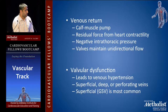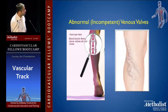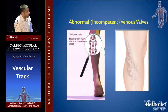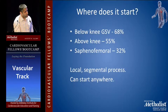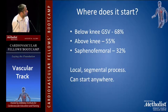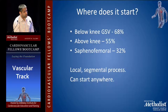The saphenous vein is the most common vein affected. If you have incompetent venous valves, blood flows in the opposite direction, resulting in increased pressure in the lower leg and symptoms develop. In most cases it starts below the knee in the saphenous vein — almost 70%. Above the knee in half, and the saphenofemoral area in about 32%. Usually it's a local or segmental process and can start anywhere.